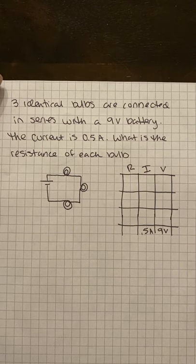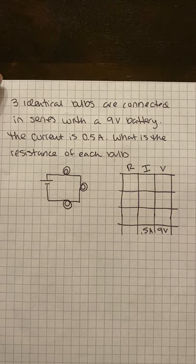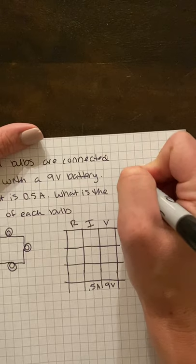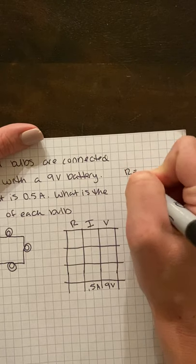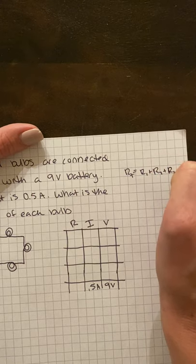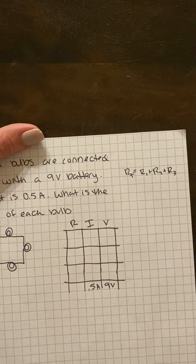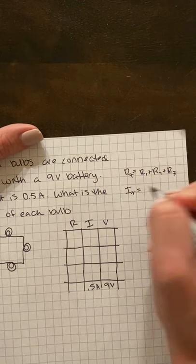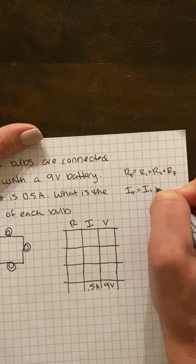So in this case, the rules for series are: your resistance total is equal to R1 plus R2. The more resistors you add in series, the more resistance you're going to have. The current in series—the total is the same as the current through each of the resistors.